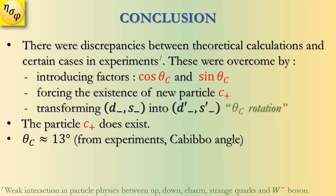In conclusion, we started with the discrepancies between theoretical calculations and certain cases of experiments in the weak interaction between up, down, charm, and strange quarks and the W-minus boson. This problem was overcome using three steps: first, introducing factors cosine(theta-c) and sine(theta-c); second, forcing the existence of the new particle c-plus; and third, transforming d and s into d-prime and s-prime. The particle c-plus does exist, and theta-c is 13 degrees, obtained from experiment.